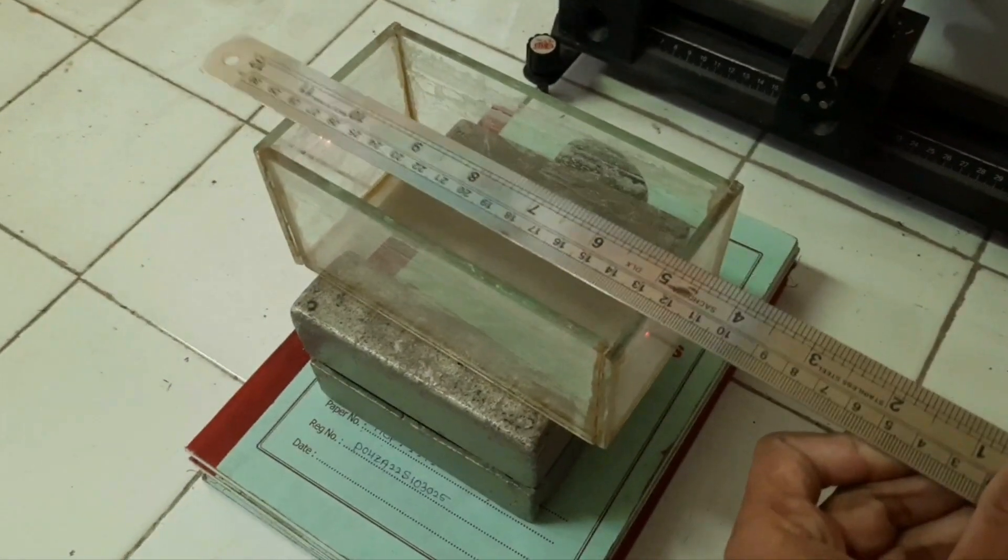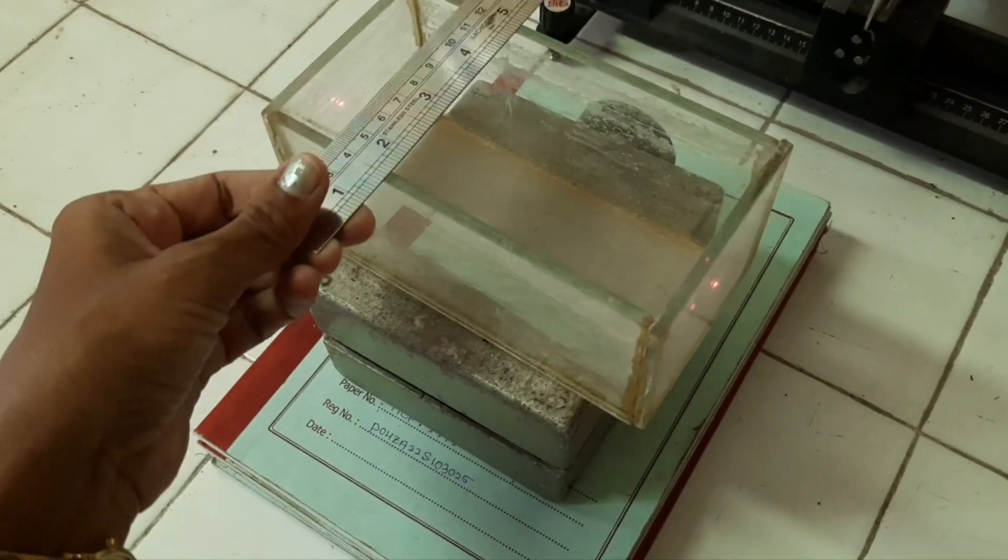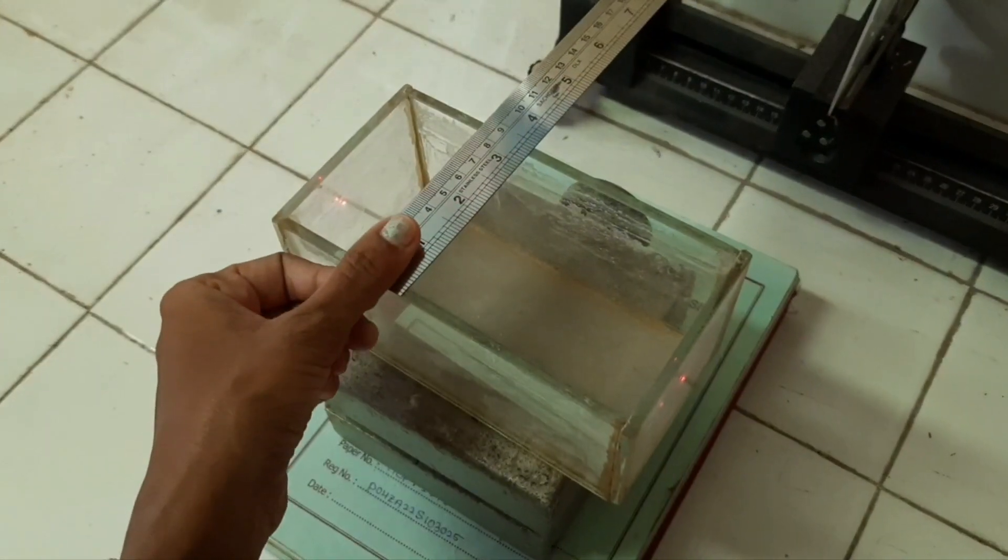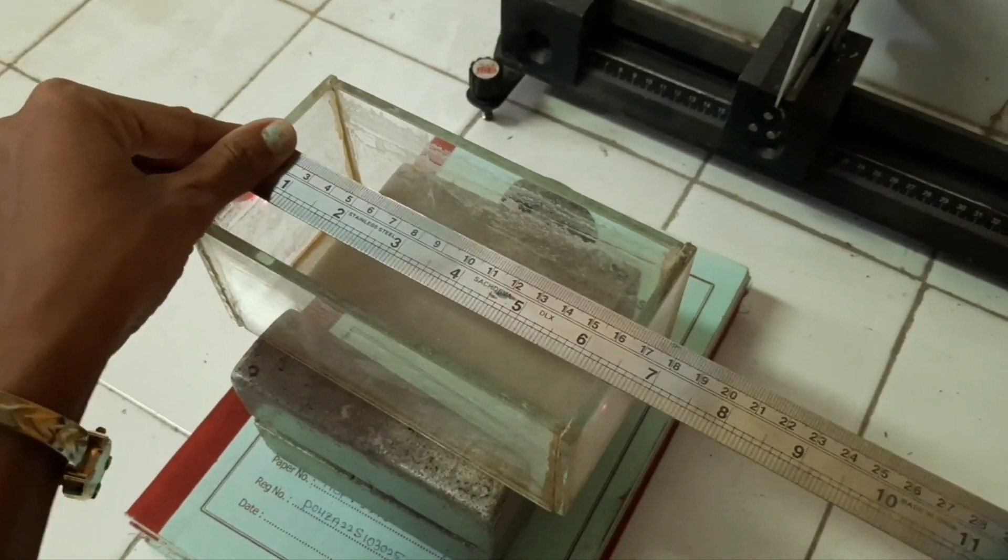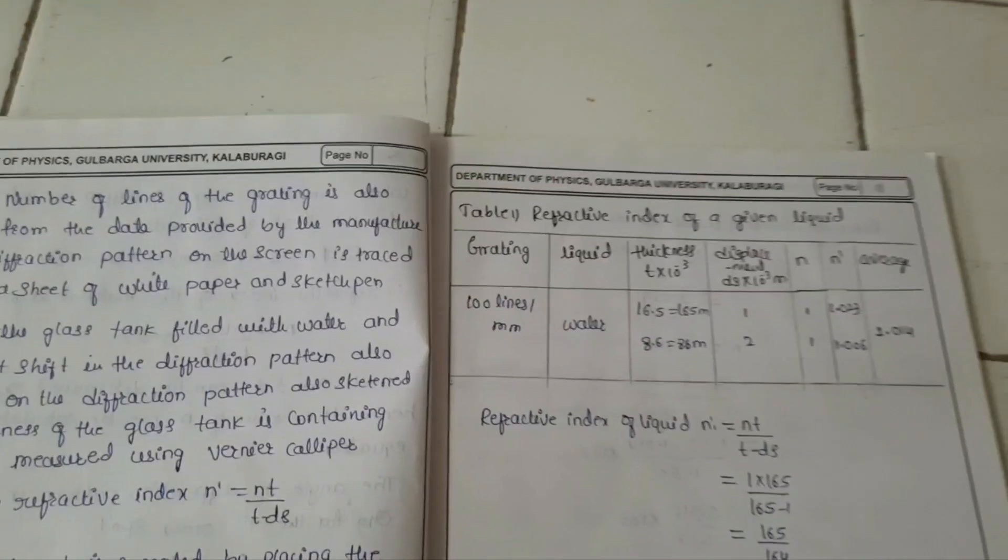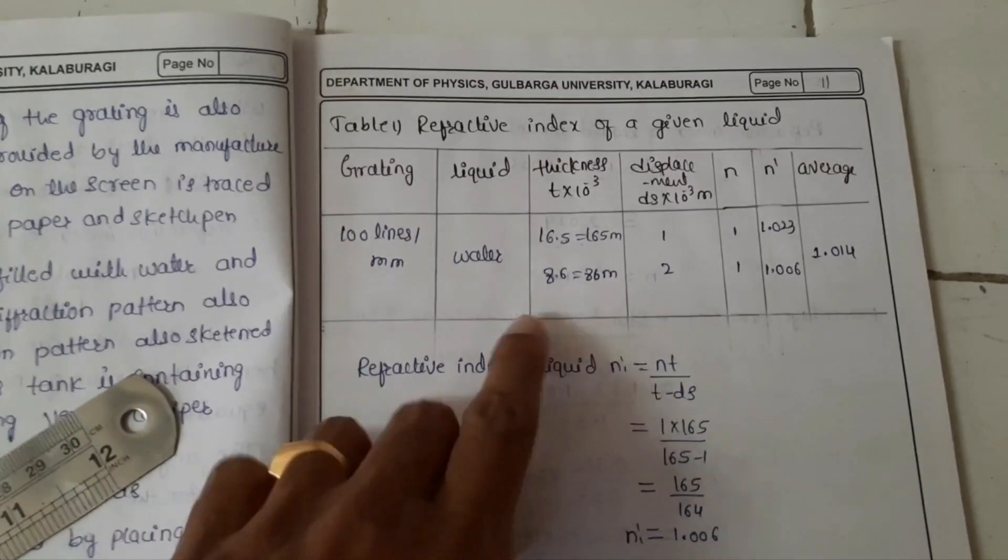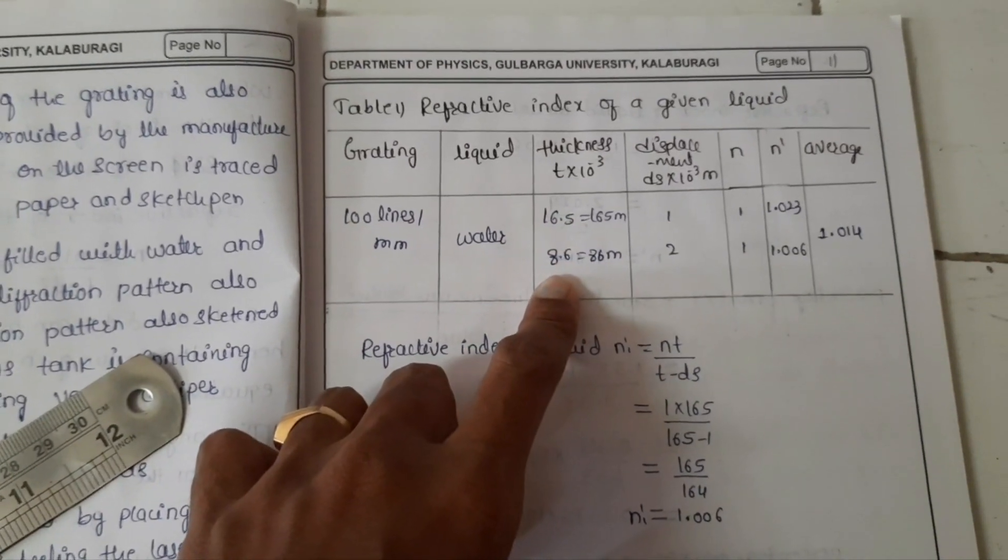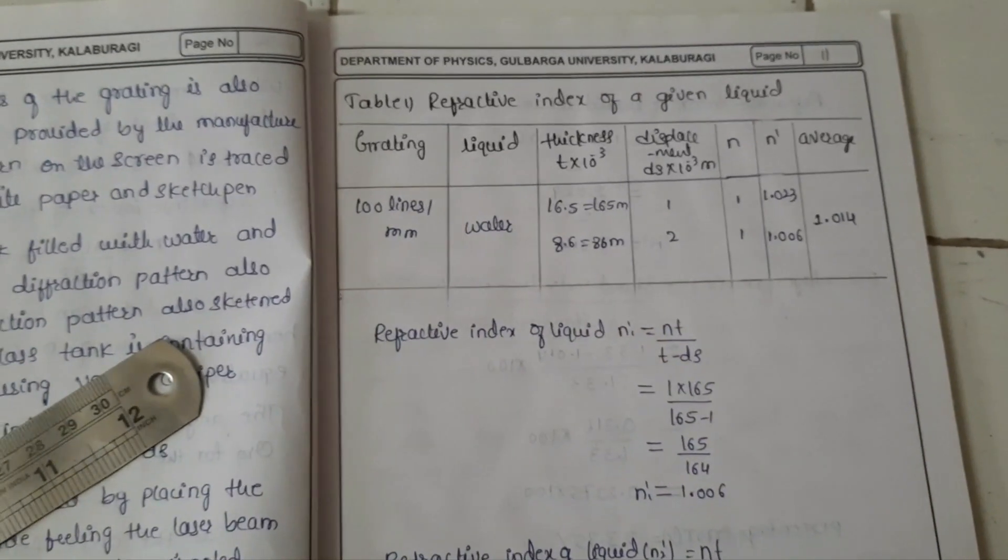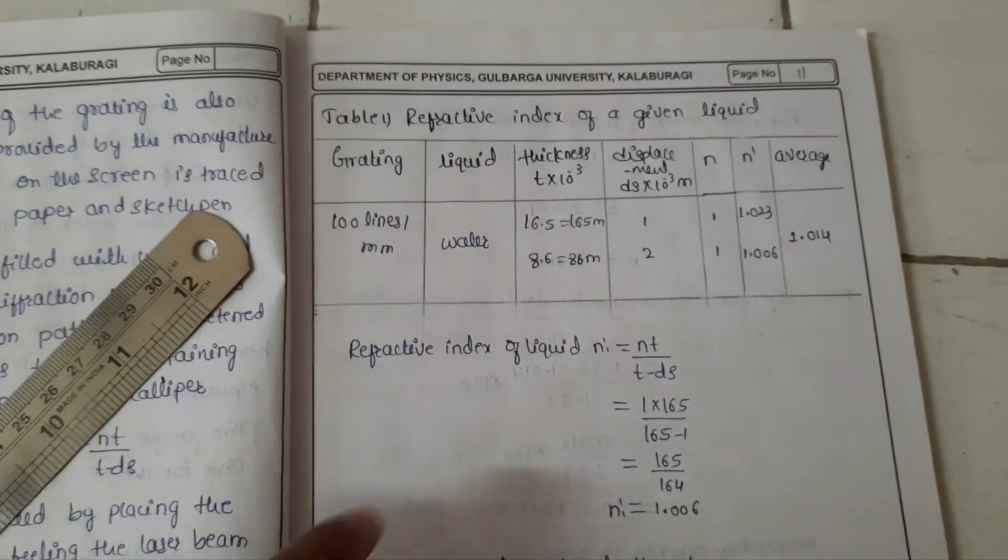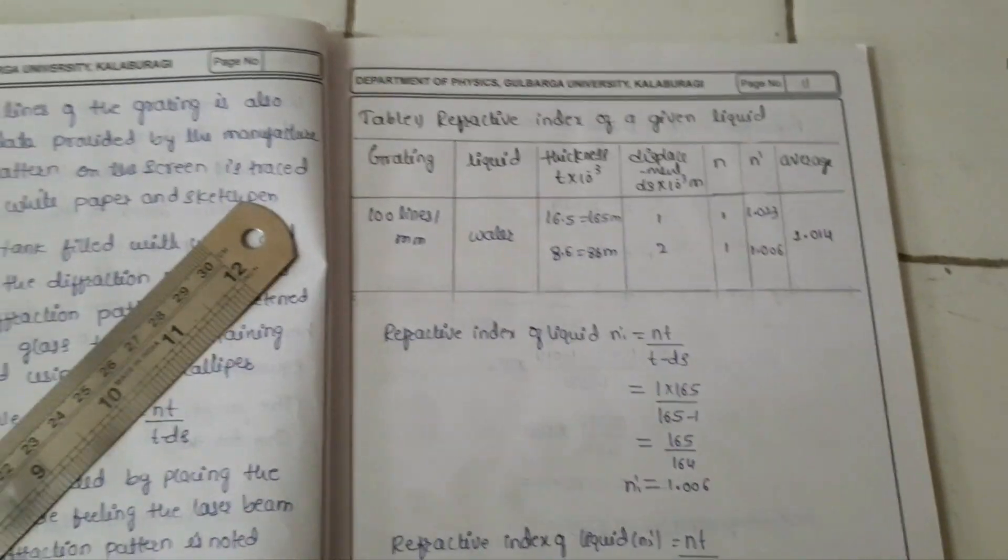See the vertical and horizontal. So we already measured it. So it is about thickness is 16.5 and 18.6 vertical and horizontal, or width or length. Then the displacement.